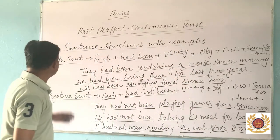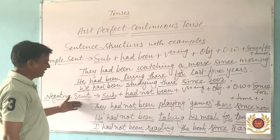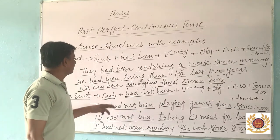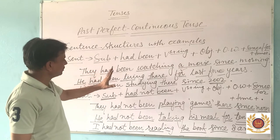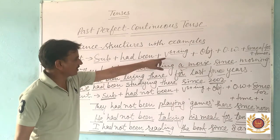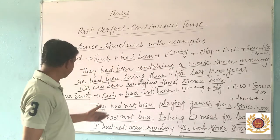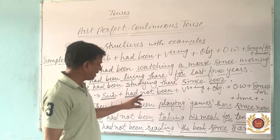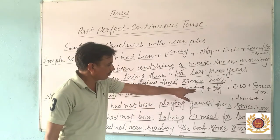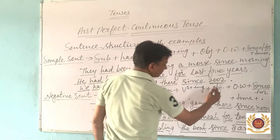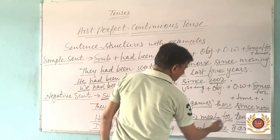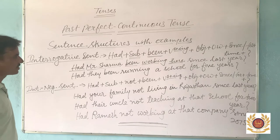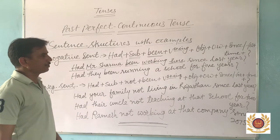So students, to summarize: in a simple sentence, we use 'had been' plus the first form of verb with '-ing'. In a negative sentence, we use 'had not been' plus the first form of verb with '-ing'. The remaining structure will be the same.